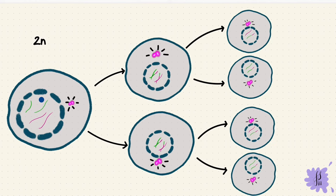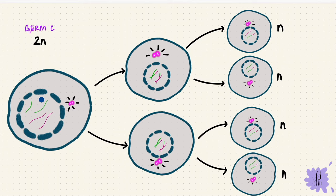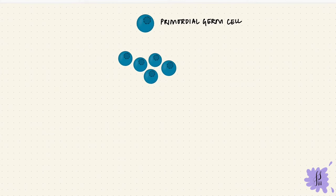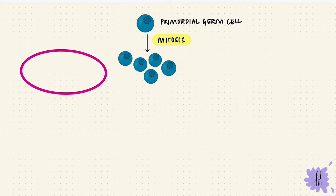From one diploid cell there are now four haploid cells. They became haploid because after fertilization that number will go back up to diploid. The diploid cell was a germ cell; the haploid cell is a gamete. Now we apply this to oogenesis. The primordial germ cell divides multiple times as it migrates, forming more germ cells — that is mitosis, not meiosis, since it's forming more germ cells, not gametes. They migrate to the gonadal ridge, which is the developing ovary.